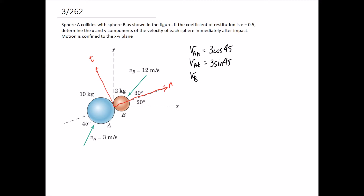Now looking at vB in both directions: the normal component is pointing in the negative n direction and there's a 30-degree angle between the vector and the n-axis, so it's negative 12 cos 30. For the tangential component it's also pointing in the negative t direction, so it's negative 12 sin 30.